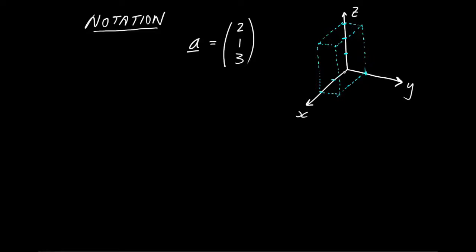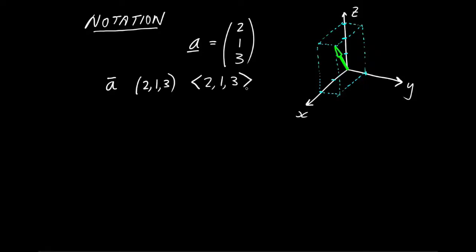So the vector is coming towards us out of the screen and it has those particular three components: 2, 1, 3. Other people may use other notations — for example, a line over the symbol A is commonly used. When people write out the components, they may choose to do it as a row, or even using pointy brackets. All these notations are basically getting at the same thing. You'll be able to read textbooks or look online and understand what they mean. But within this course, we'll use the notation introduced above.